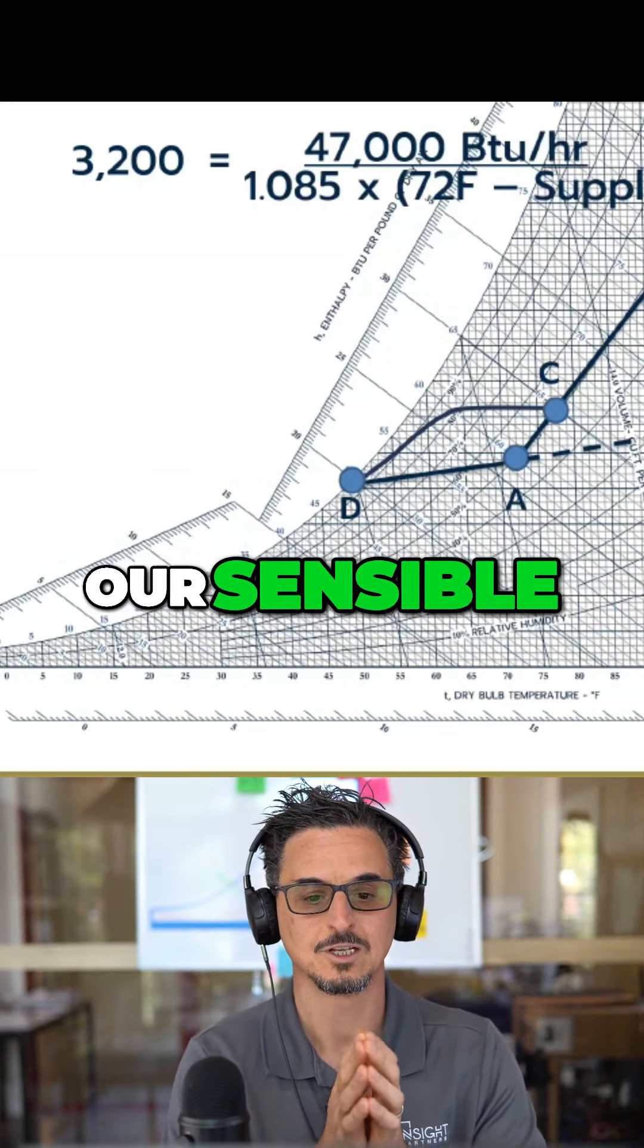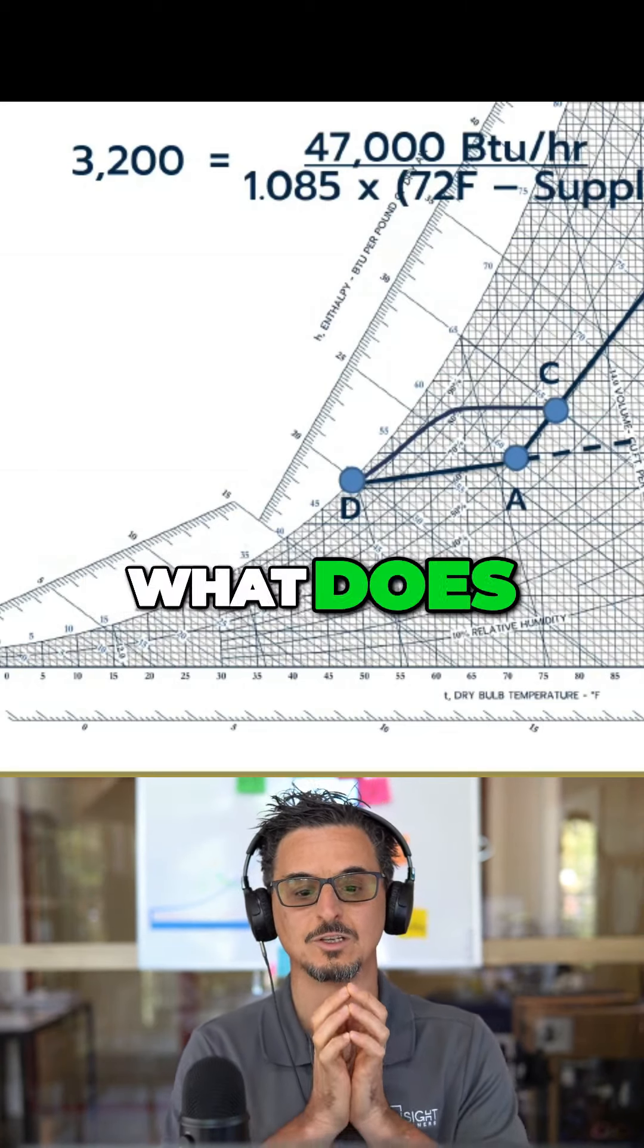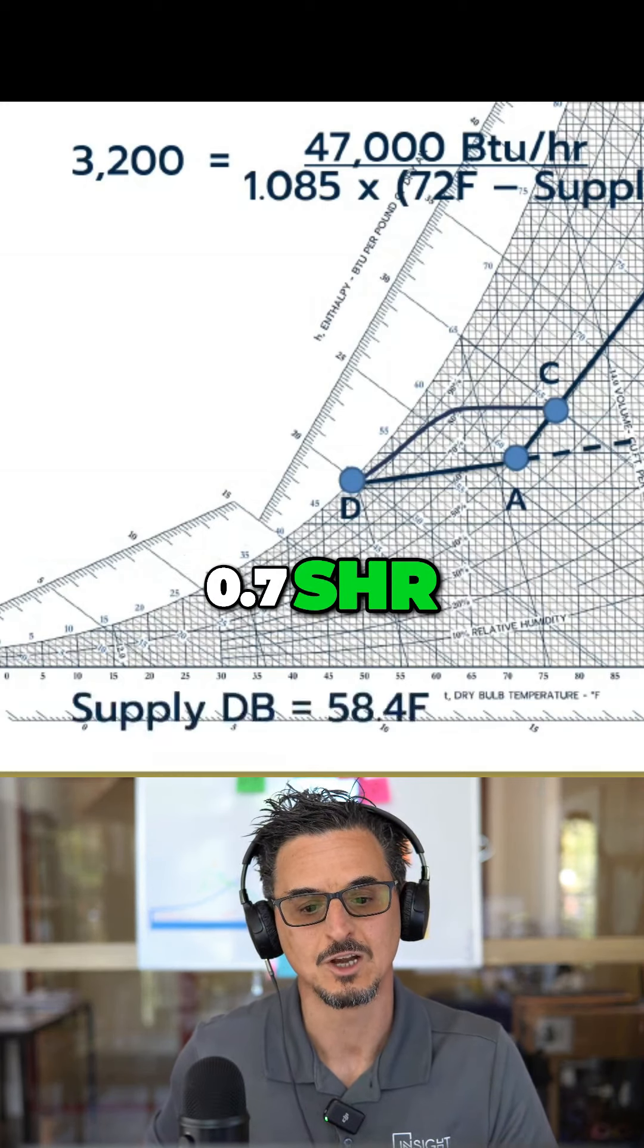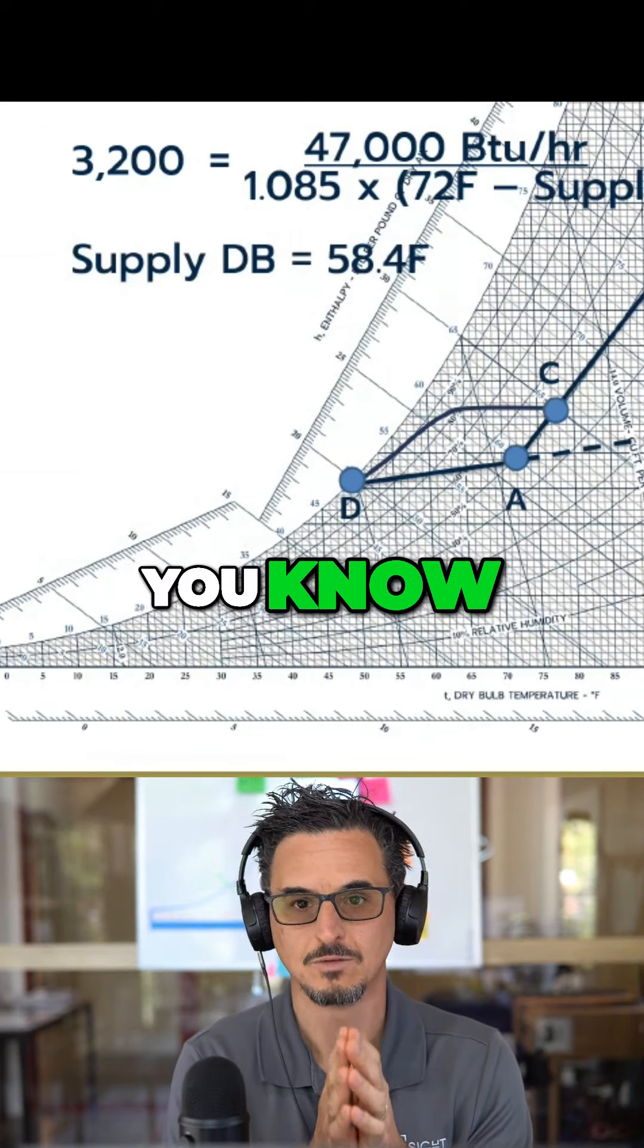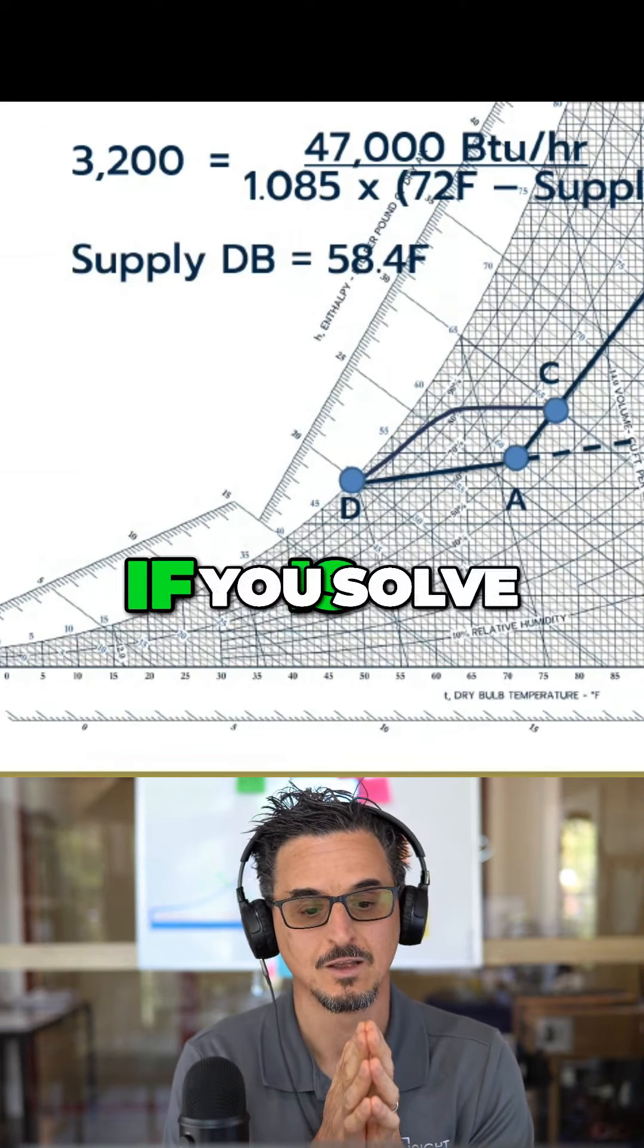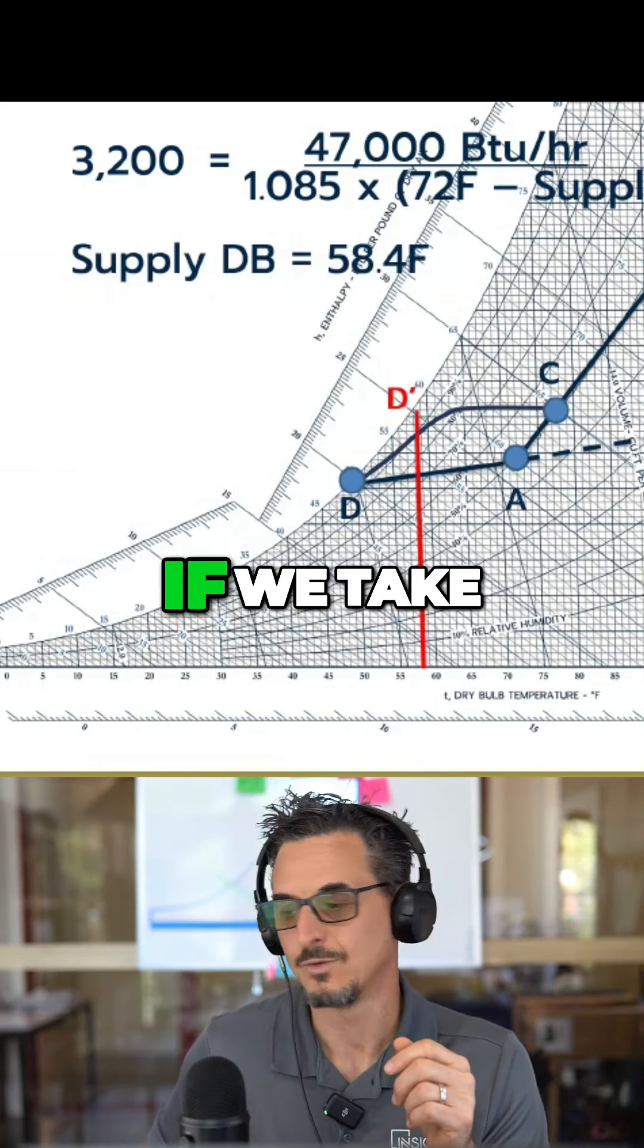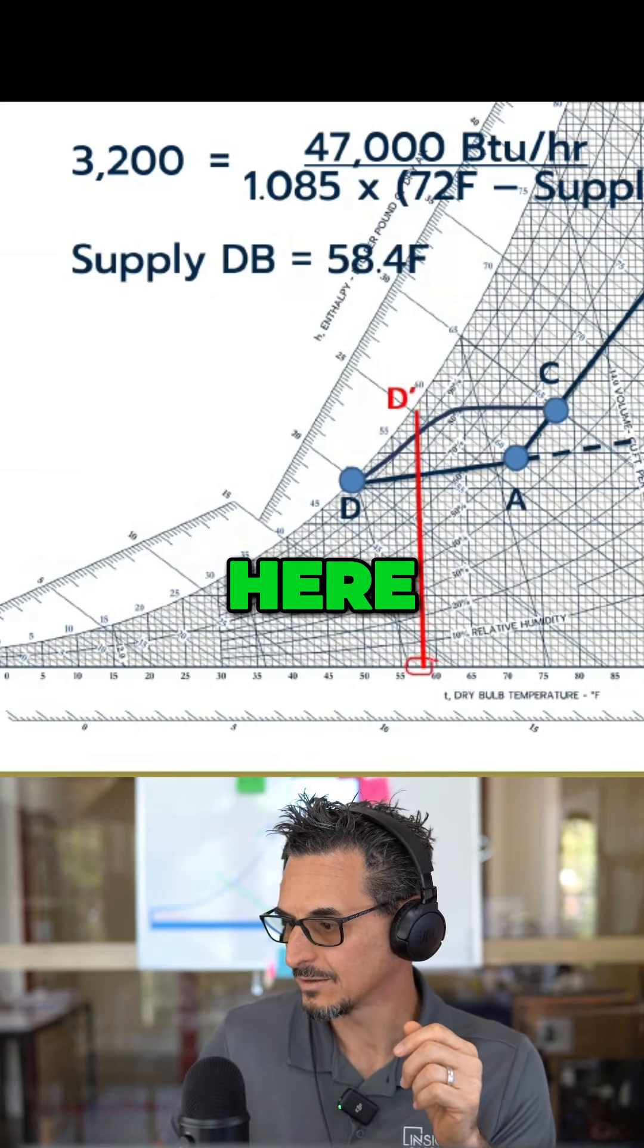There is our sensible heat equation, solving for supply dry bulb. So what does the supply have to be at this 0.7 SHR to not over-cool the space? The supply is, if you solve for this equation, 58.4. Now if we take that and put it in here, we plot it here, 58.4, and we go up to the saturation line, it gets us right here.